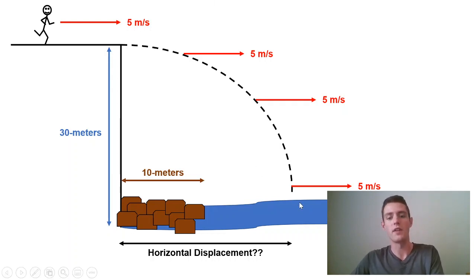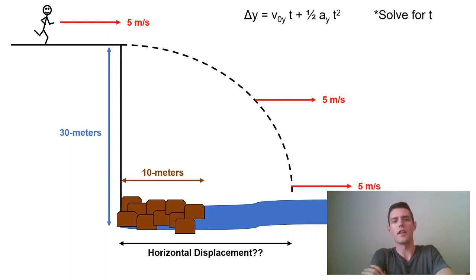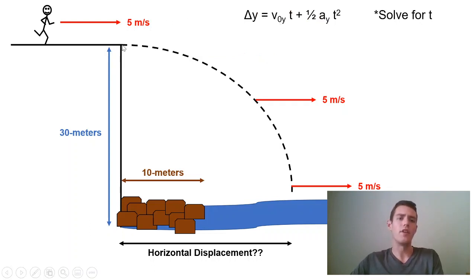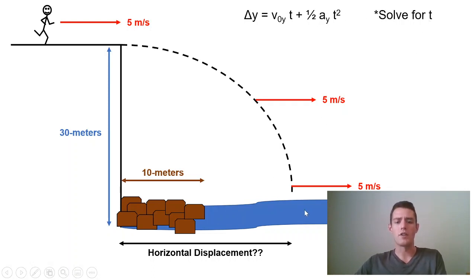I know what the ultimate vertical displacement is — it's 30 meters. They're going from 30 meters to zero. I know their initial velocity. I would take my knowns and plug them into equations. Because I know delta y and my initial vertical velocity, which is zero as soon as you leave there, and I don't know time, but we do know acceleration is negative 9.81 — I would solve for t.